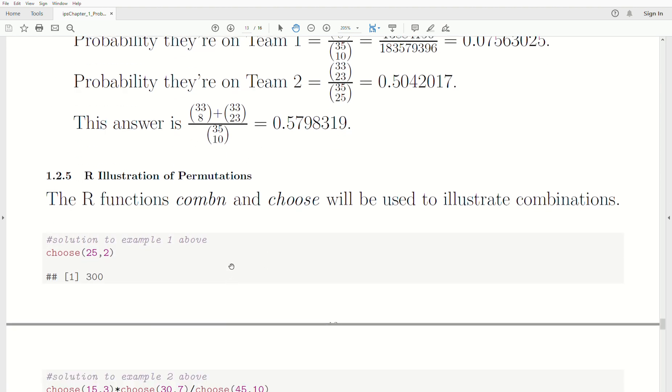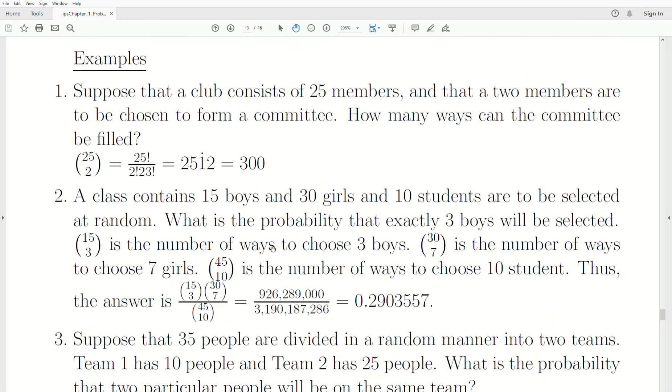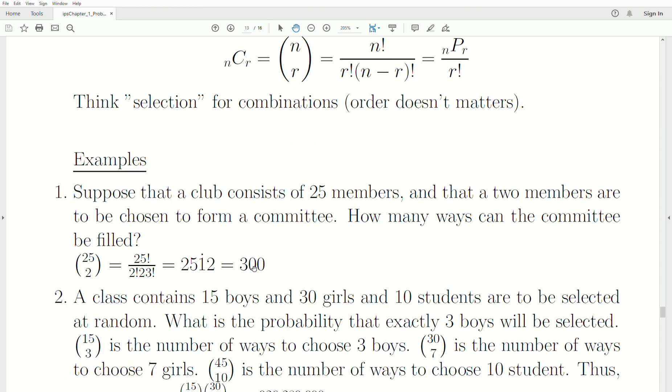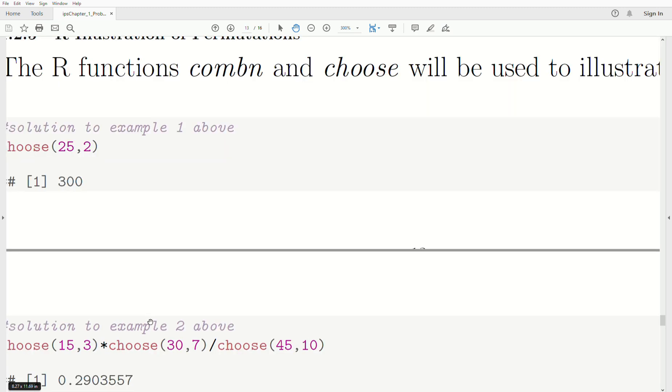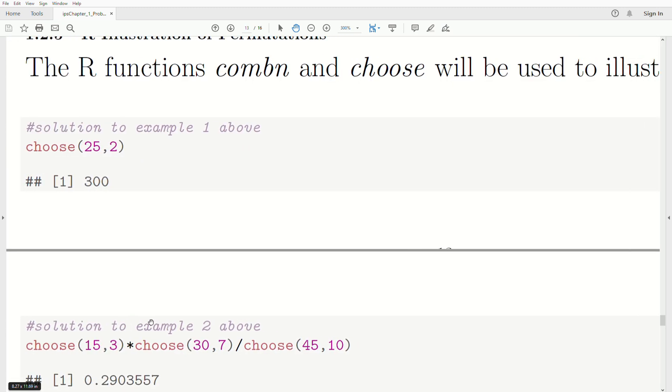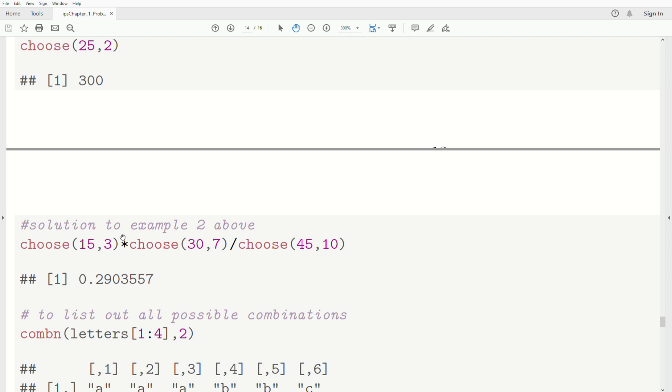So let's illustrate a couple functions in R that I've used in the past quite a bit, actually, when I'm trying to figure out a problem. Let me just illustrate them. So the first one is the function choose. That's the combination formula that we first covered. It's the binomial coefficient. So choose 25 and 2. So that's 25 choose 2. That's 300. That's the same answer we got in our example above.